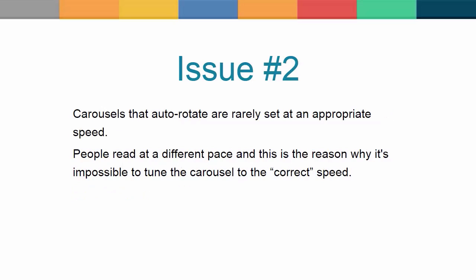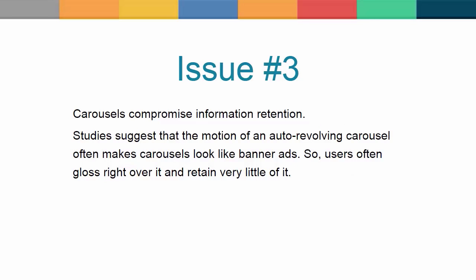Issue number 2: carousels that auto-rotate are rarely set at an appropriate speed. People read at a different pace, and this is the reason why it's impossible to tune the carousel to the correct speed. Whether it be too slow or too fast, it annoys. Carousels compromise information retention. Studies suggest that the motion of an auto-revolving carousel often makes it look like a banner ad, so users often gloss right over it and retain very little of it.